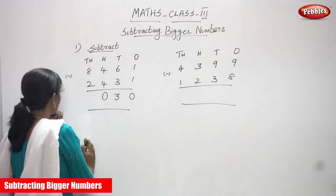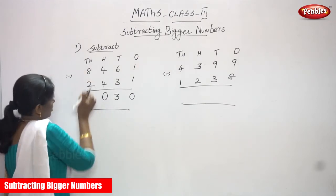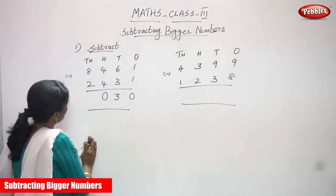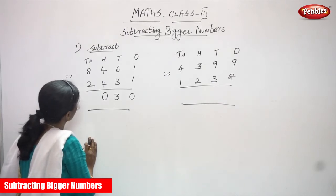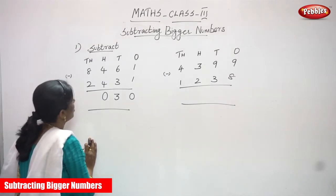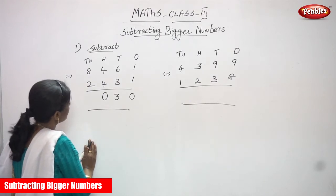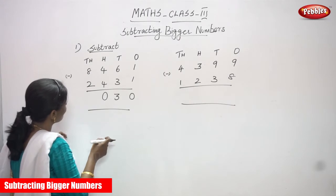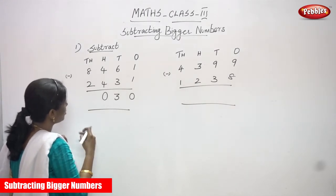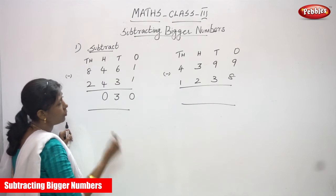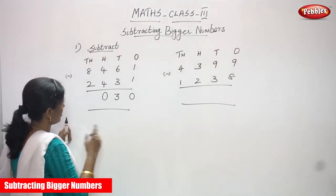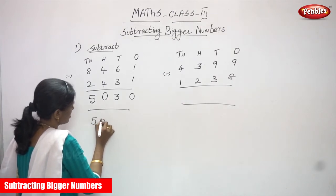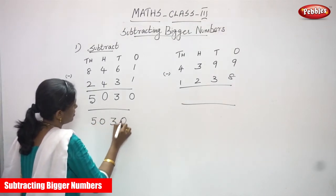Now I'm going to do the 1000s place. What are the numbers in the 1000s place? 8 minus 2. Start doing the backward counting after 2, up to 8: 3, 4, 5, 6, 7 — so the answer is 6. The answer for the first question is 6, 0, 3, 0.